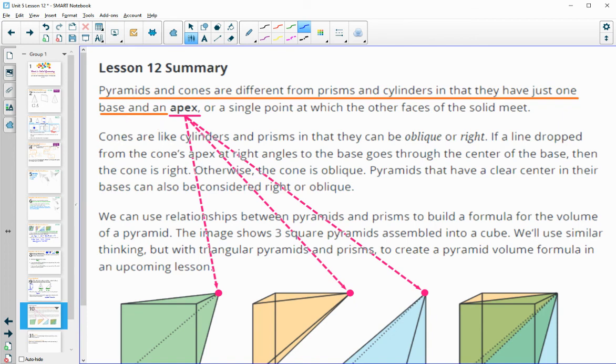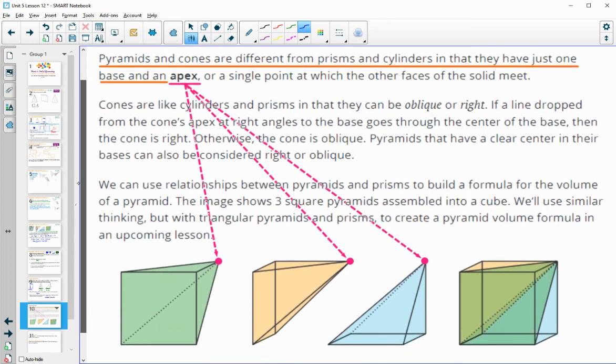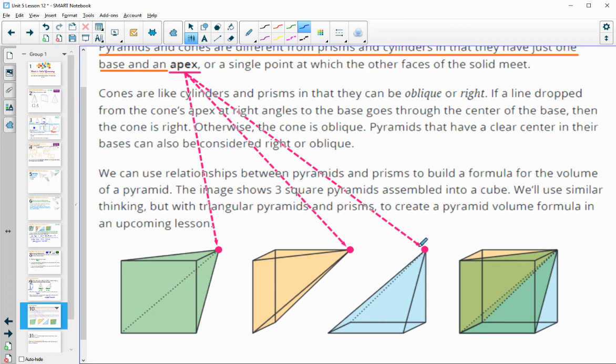So in this lesson, we know that pyramids and cones are different from prisms and cylinders because they just have one base and an apex - the apex being that point that they go up to. They're like prisms and cylinders in the fact that they can be right or oblique. If all the sides are perpendicular to that base, going from the apex to the center of the base, then you would have a right pyramid. If that is not a 90 degree angle, then you have an oblique.